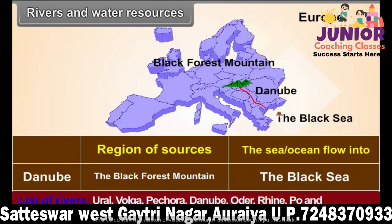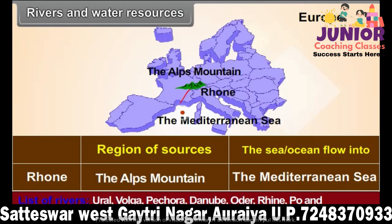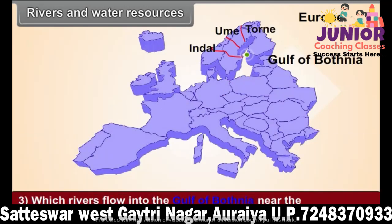Question: Name any two rivers flowing through the North European plains. Question 3: Which rivers flow into the Gulf of Bothnia near the Scandinavian peninsula? Question 4: As the rivers originating in the Scandinavian peninsula are located between 60 degrees and 80 degrees north latitude, what could be their source — a spring, a lake or a glacier?